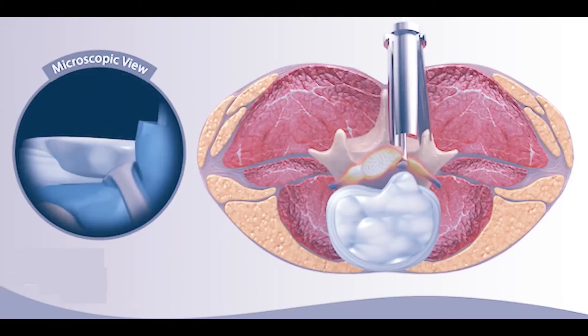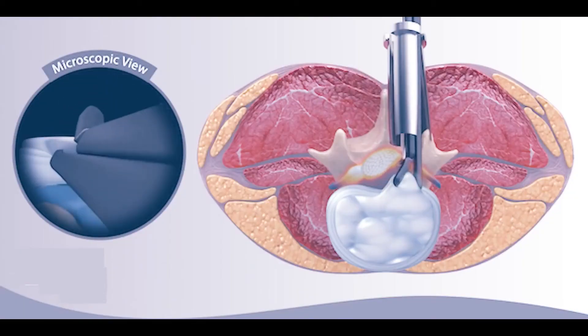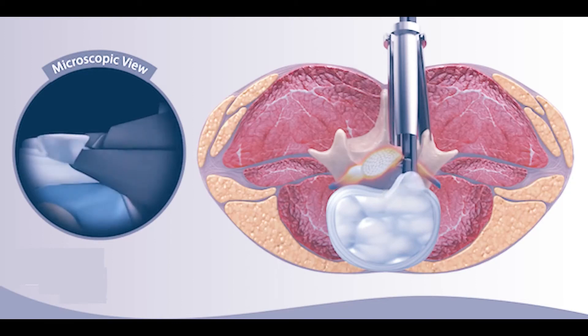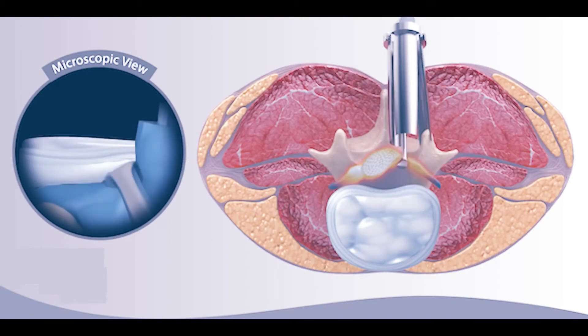Microdisectomy is a minimally invasive surgical procedure to remove the fragment of the herniated lumbar disc to relieve lower back pain.